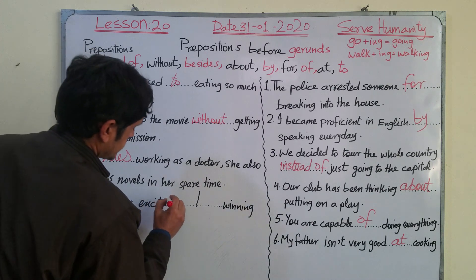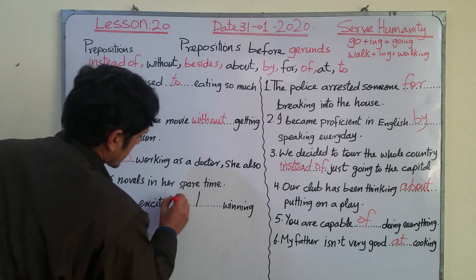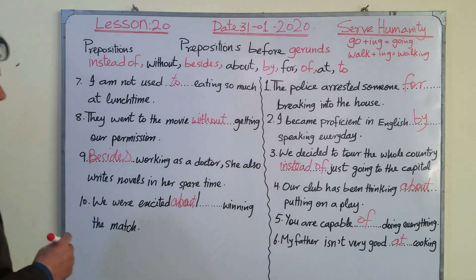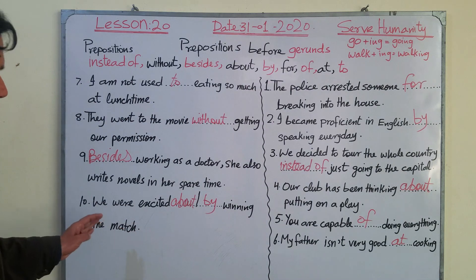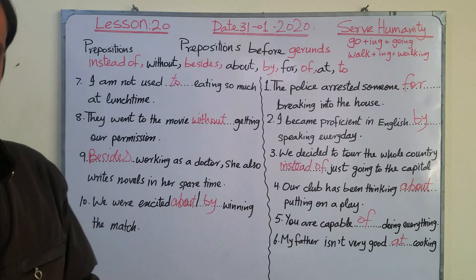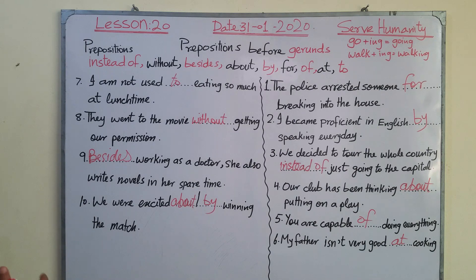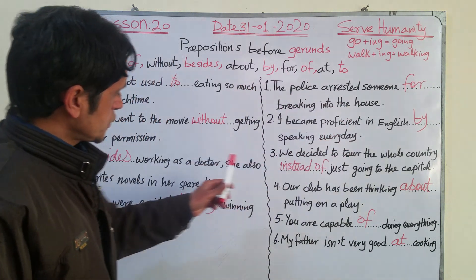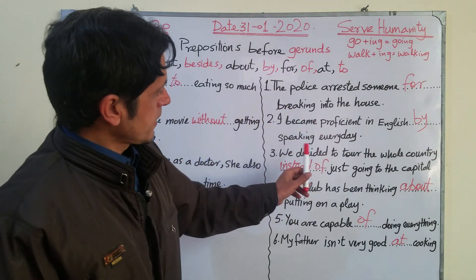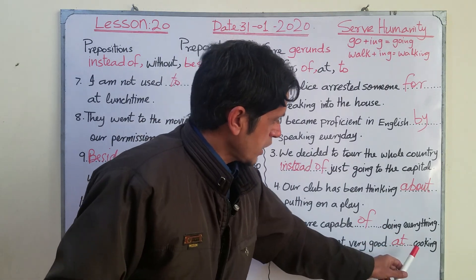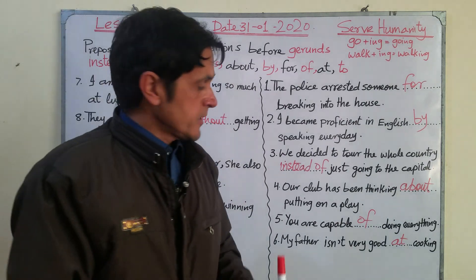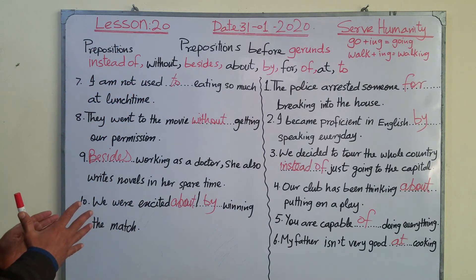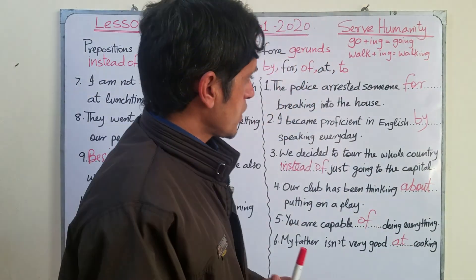Number nine — BESIDES working as a doctor, she also writes novels in her spare time. Number ten — we were excited ABOUT winning the match, or we were excited BY winning the match. So both 'about' and 'by' are correct here. All these prepositions — for, by, instead of, about, of, at, to, without, besides, about/by — are used before gerunds: breaking, speaking, putting, doing, cooking, eating, getting, working, winning.